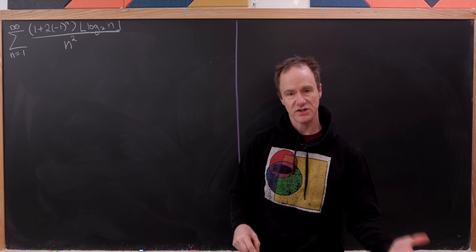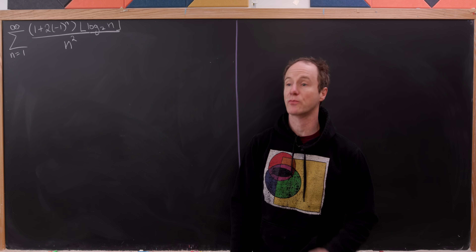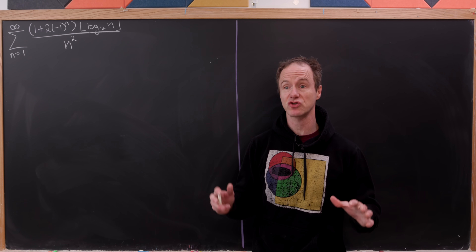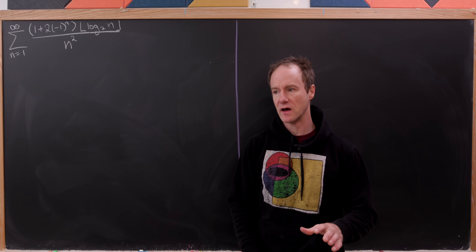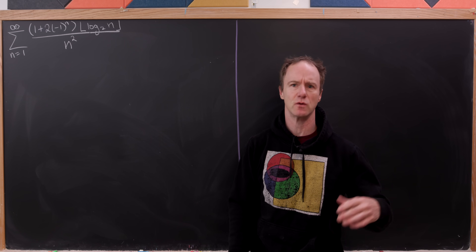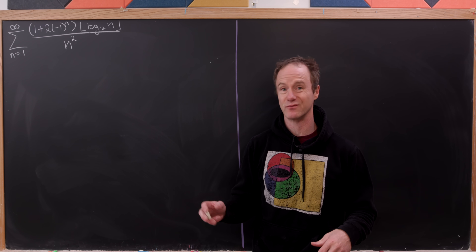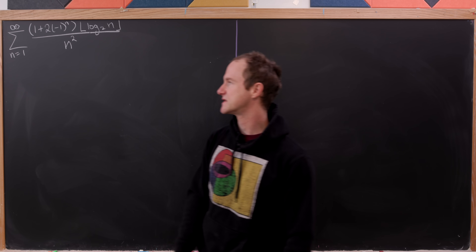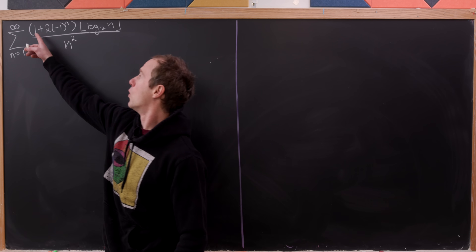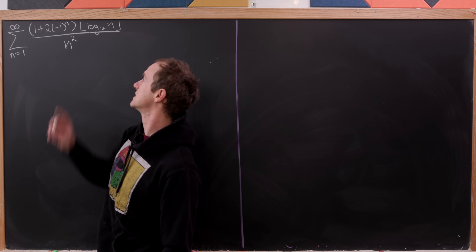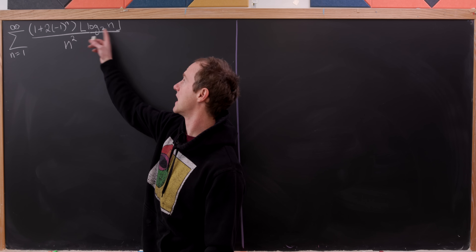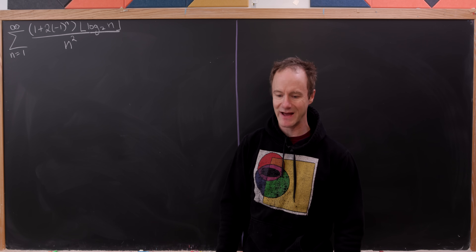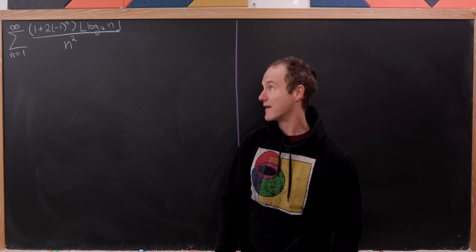Today we're going to evaluate a sum that was suggested by the channel's favorite problem suggester. What I like about this sum is there's a trick towards the middle end of our evaluation that I think is really cool — a unique trick I've never seen before. We're going to evaluate the sum as n goes from 1 to infinity of 1 plus 2 times negative 1 to the n, multiplied by the floor of the log base 2 of n, all divided by n squared.